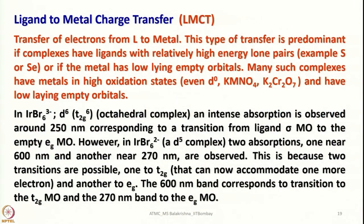What is ligand to metal charge transfer transition? As the name says, transfer of electrons occurs from ligand to metal. This type of transition is predominant if complexes have ligands with relatively high energy lone pairs — for example, sulfur or selenium — or if the metal has low-lying empty orbitals. Many such complexes have metals in the highest oxidation state. In case of LMCT, the metal exists in higher oxidation states and has fewer electrons in their d orbitals. For example, KMnO₄ (potassium permanganate) or potassium dichromate have 0 electrons in their d orbitals, hence one can anticipate ligand to metal charge transfer transition. That LMCT is responsible for the intense color of potassium permanganate or potassium dichromate.